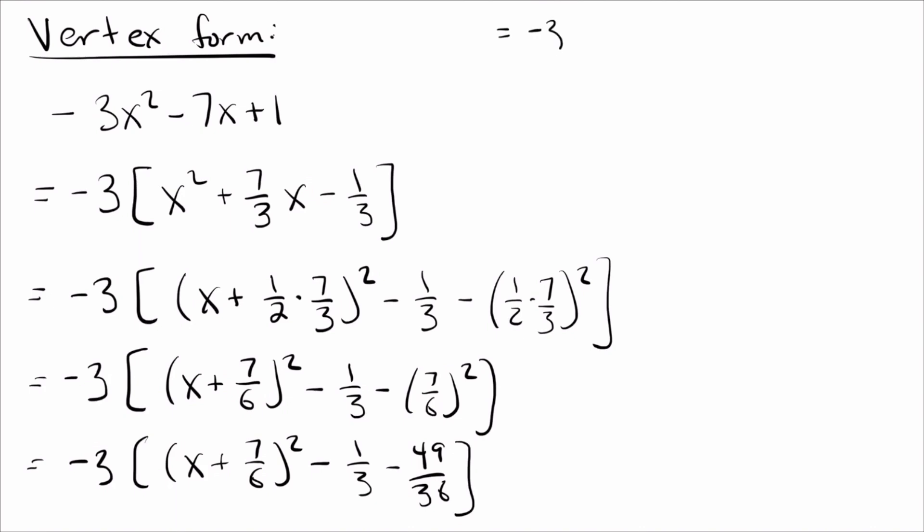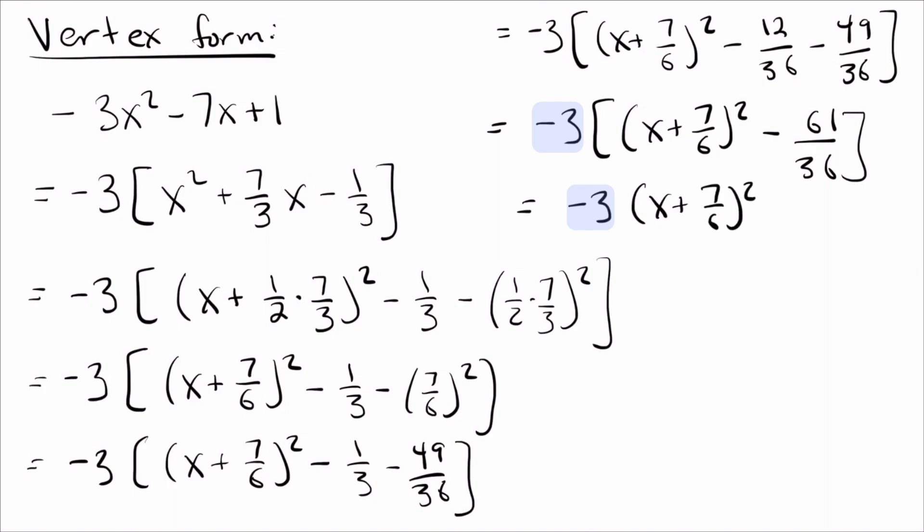In front, I'm not changing anything there. All I really need to do now is get common denominators at the end there. So my common denominator is definitely going to be 36. So 1/3, I need to multiply it by 12. That gives me 12/36 - 49/36. Let's put those two together right now. If I combine those two, that gives me -61/36. I can put my -3 back inside. So that gives me a -3 in front here, and a -3 times that. That's great. The negative times negative gives me a positive. 3/36, I can cancel. That's going to give me a 12 on the bottom. And there we go, we have found the vertex form of -3x² - 7x + 1.